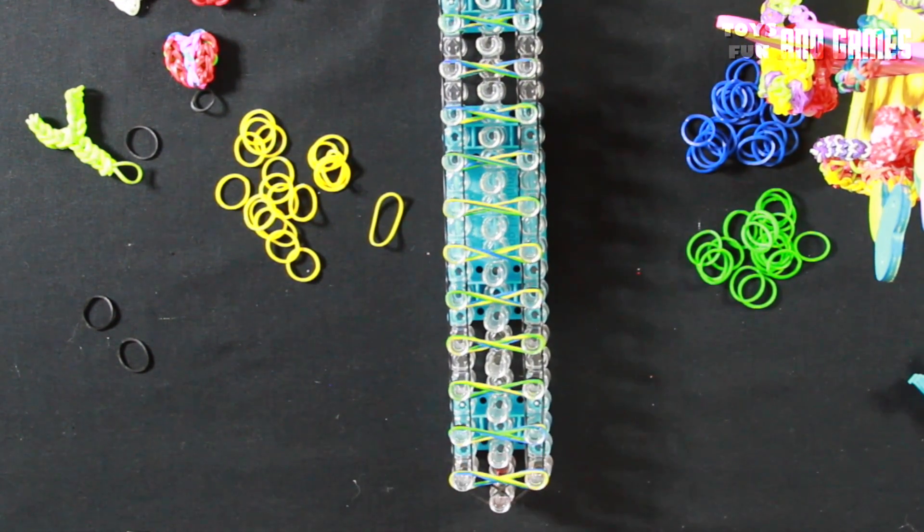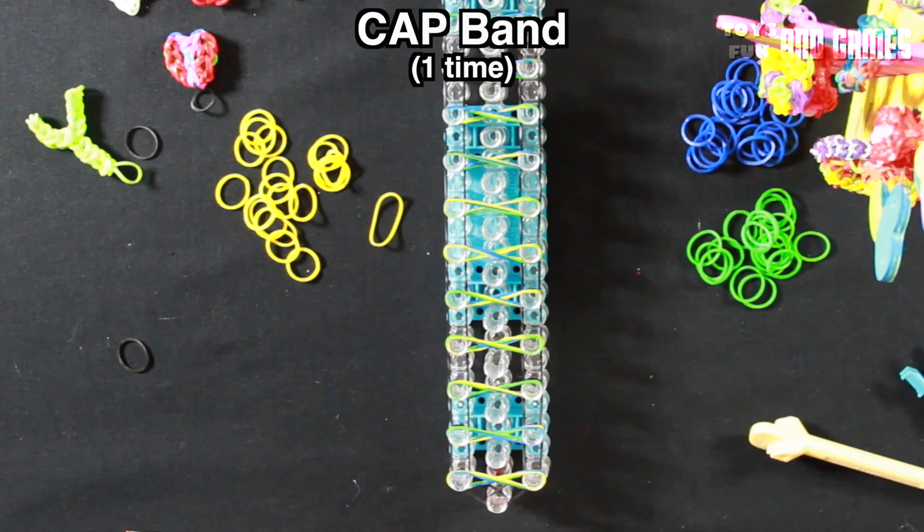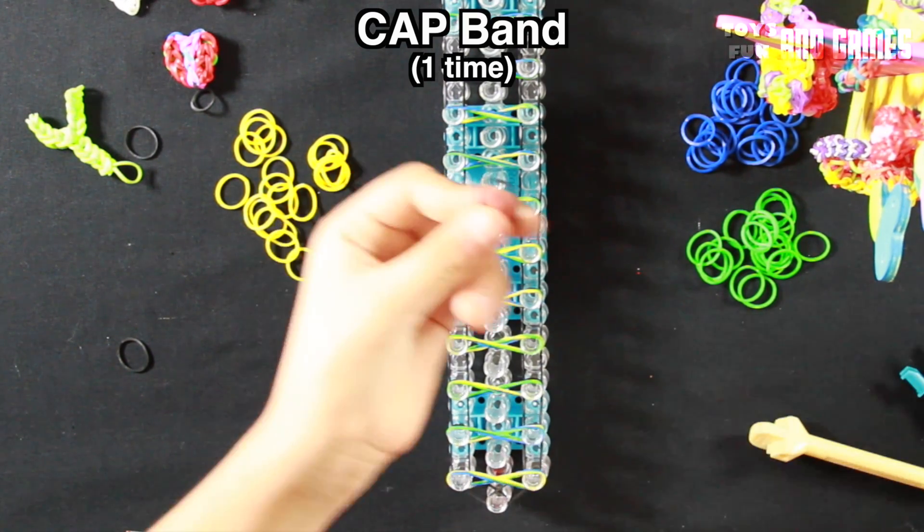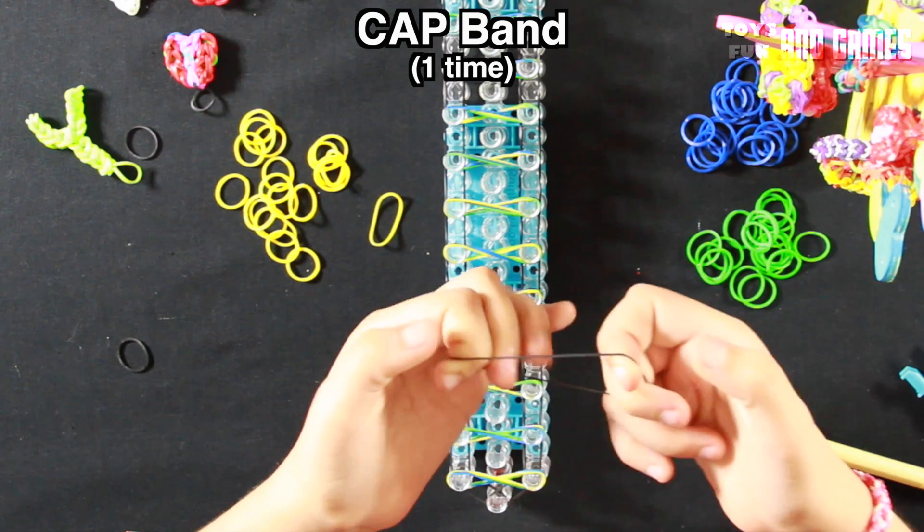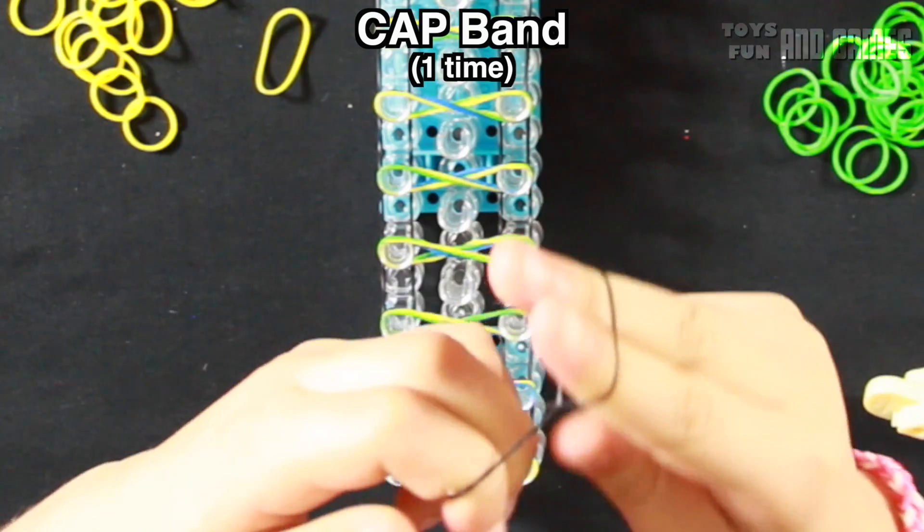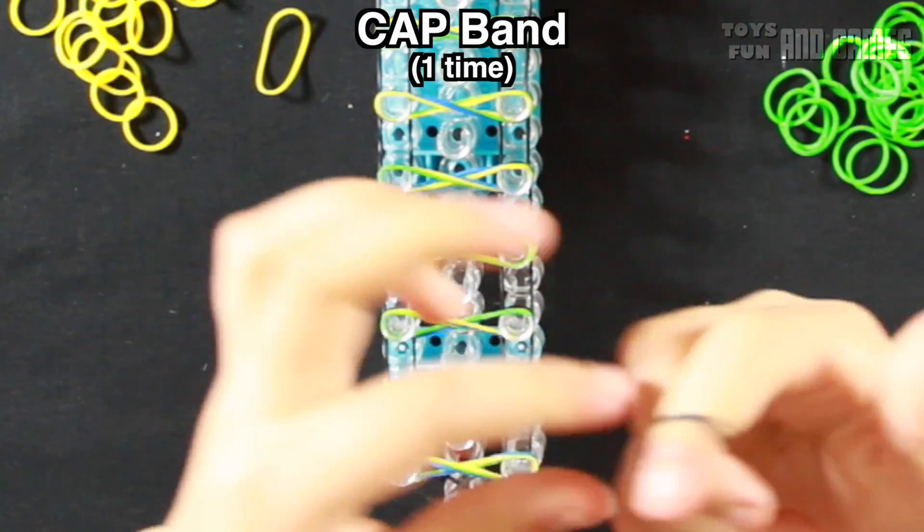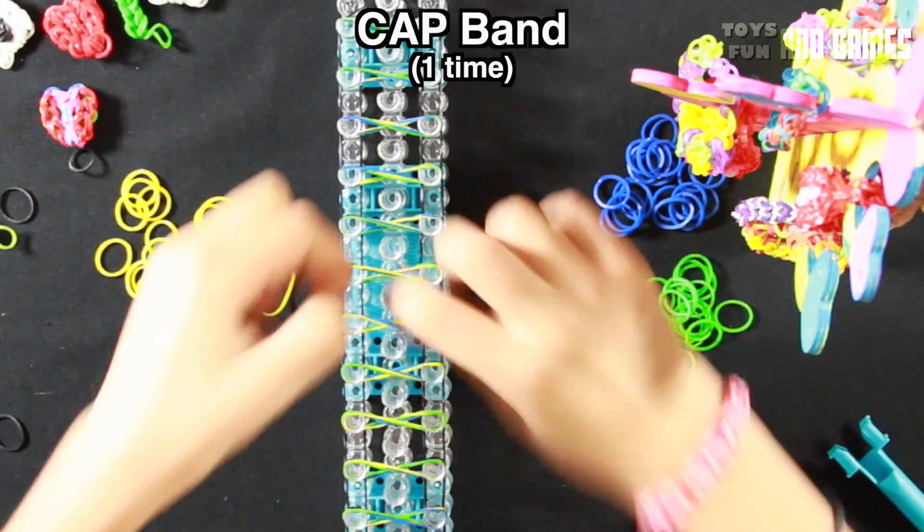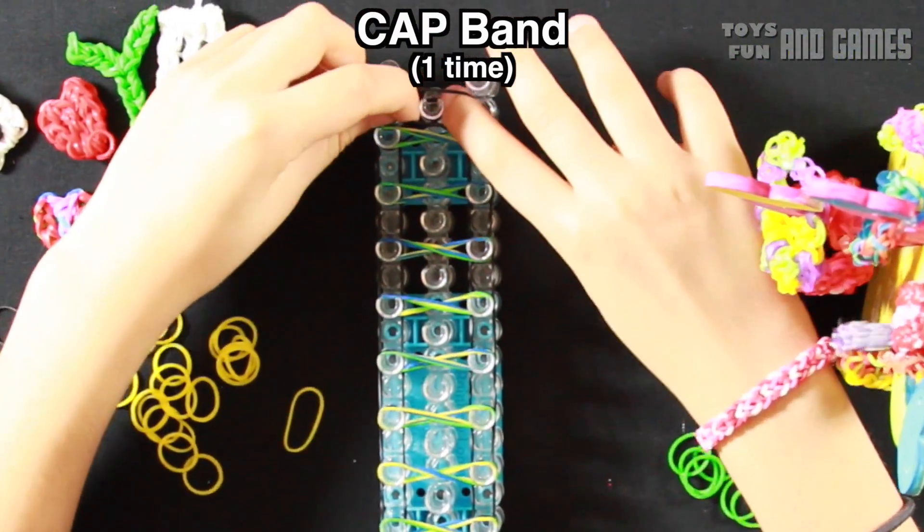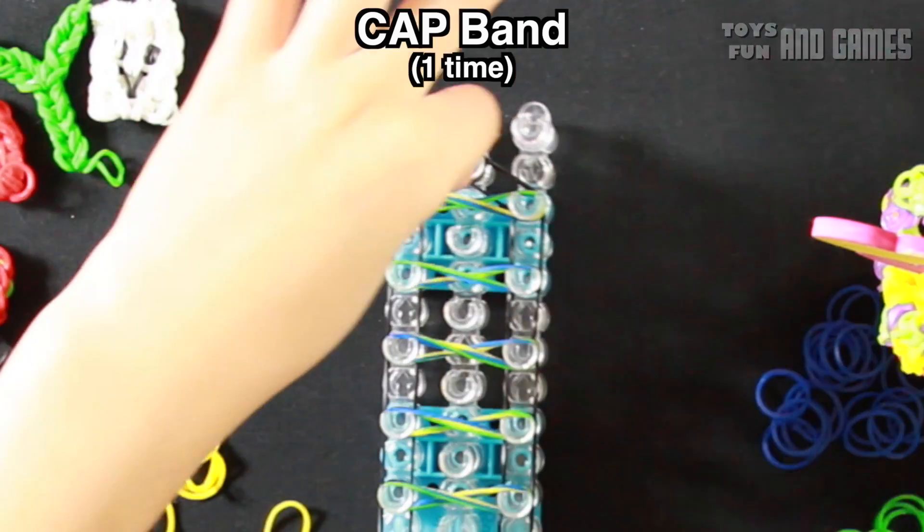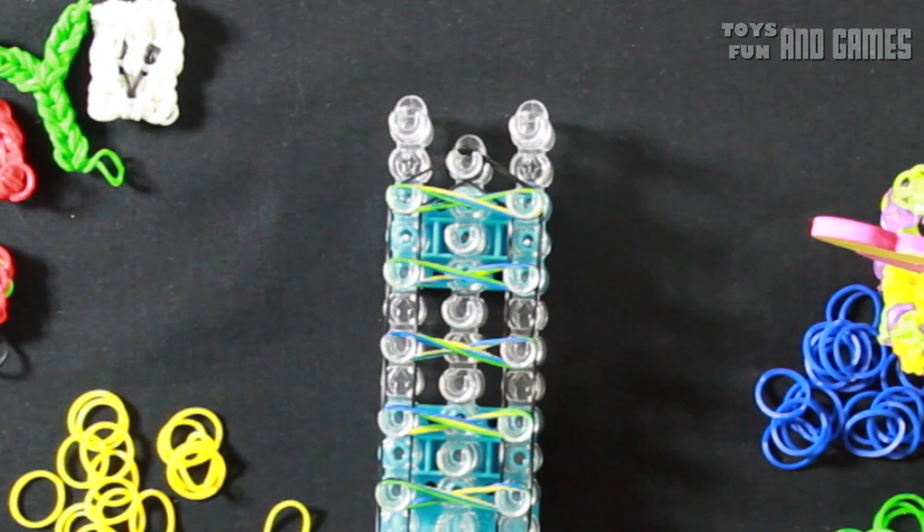Next up is cap band. What we're going to do next is grab a rubber band, put two fingers in, and then make a figure eight, and then place it on there. What we're doing is a cap band, and then place it on there, on this peg. Step two.